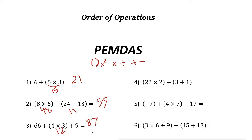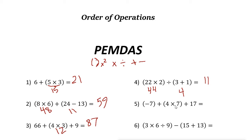Next one: we have two parentheses again. Twenty-two times two is forty-four. The next parentheses: three plus one is four. Now the division: forty-four divided by four is eleven.